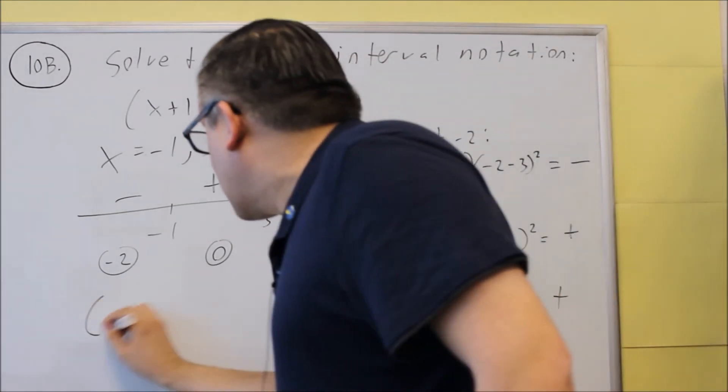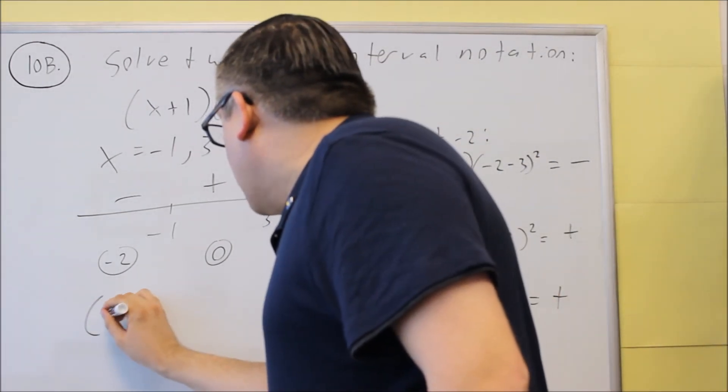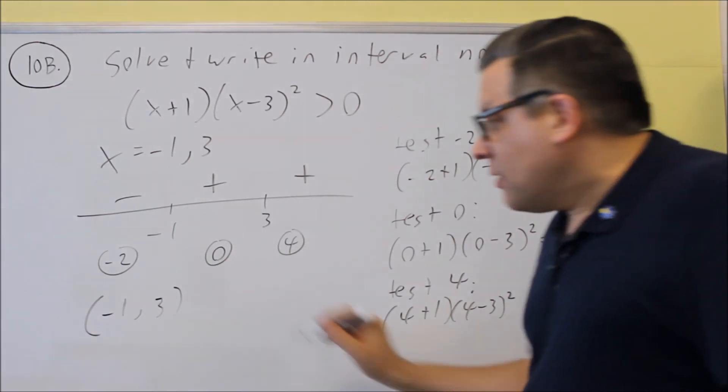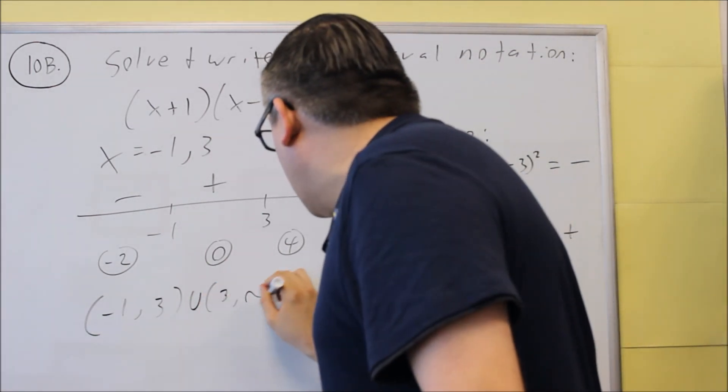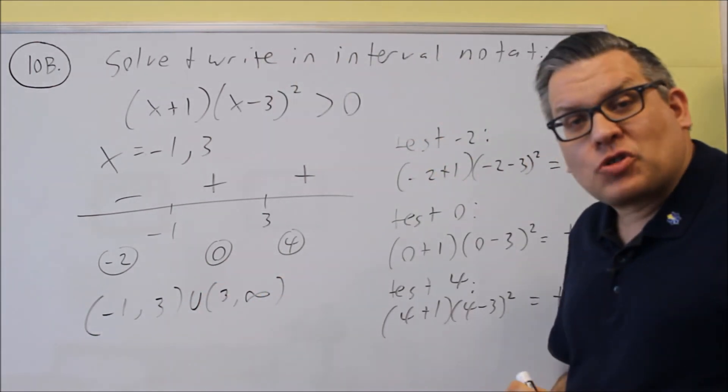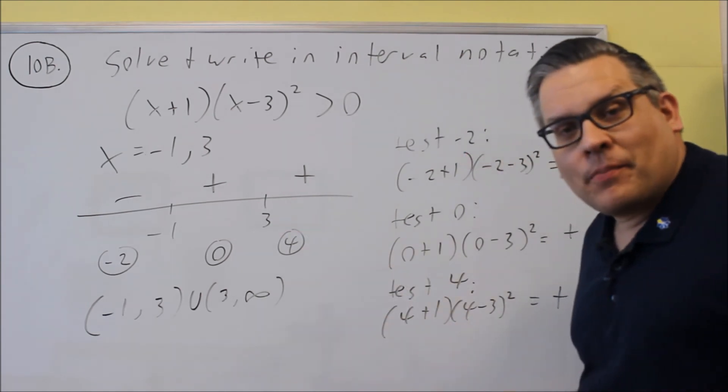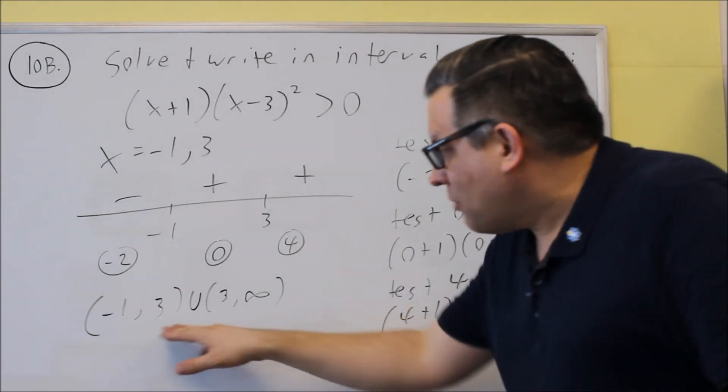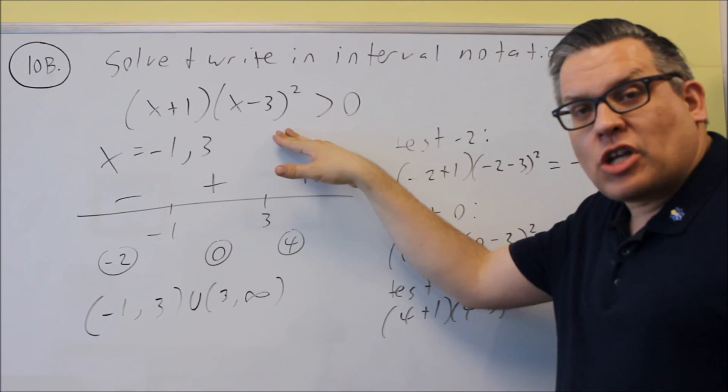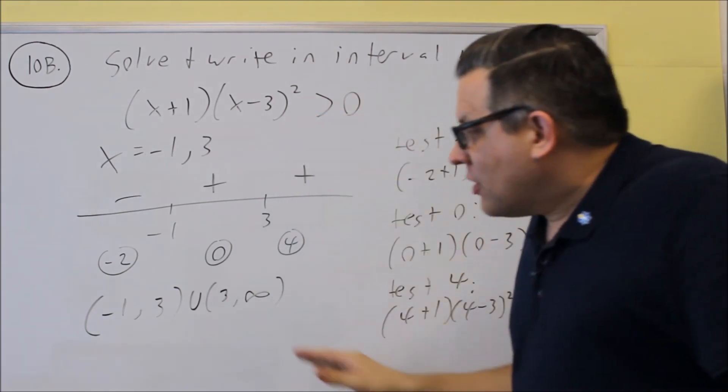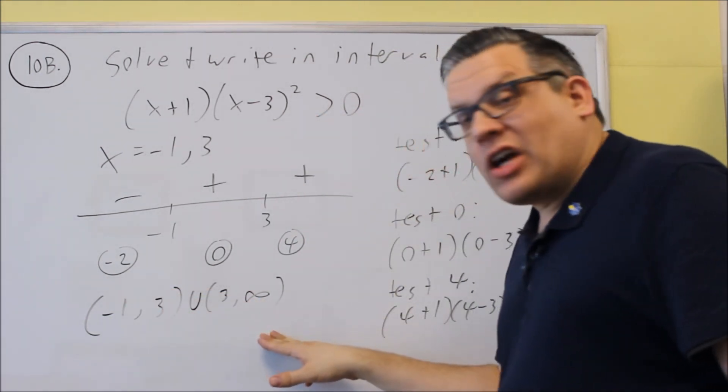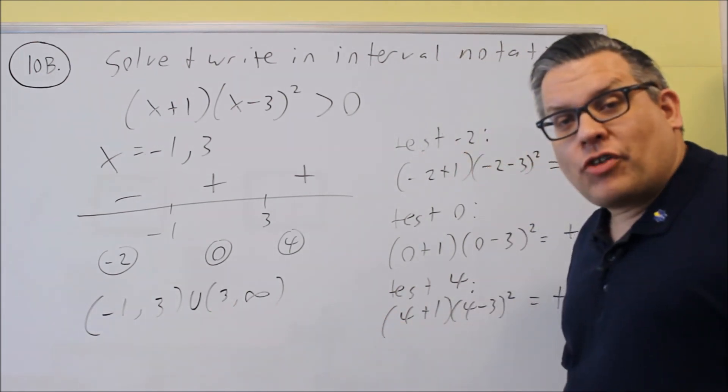Therefore, when I write my answer, I need to split this up. I need to go from negative one to three, and then from three to infinity. So I'm splitting it up. I'm not including the three as part of my answer, again, because three does not make this a true statement. Zero is not greater than zero. So therefore, you need to split it up like this. That would be your final answer.